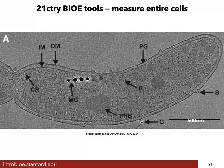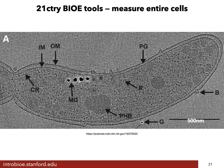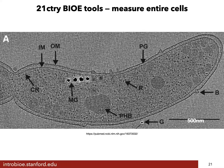This type of microscopy only became possible this century — it's called cryo-electron tomography, where you use an electron microscope to take a series of tilted images and make a three-dimensional reconstruction of the cell to see where the molecules are. I just want to give you a taste of what an incredible time it is to become a bioengineer, where we can suddenly see where all the molecules are as they build cells.